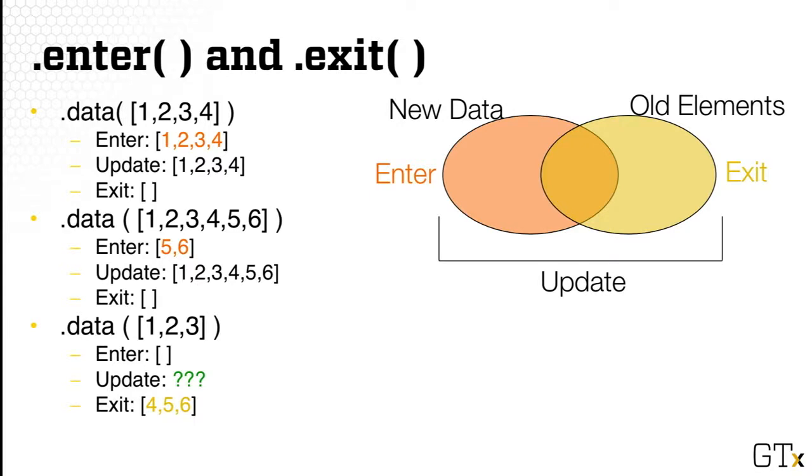Update, we need to think about what it is. But for Exit, we know that's easy. [4, 5, 6], that's what we're going to manipulate. So what are the question marks? Update is actually still [1, 2, 3, 4, 5, 6], because nothing has yet been removed until the Exit phase.